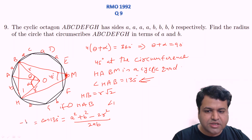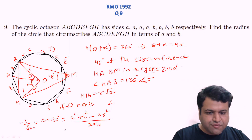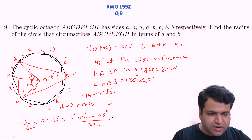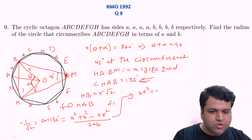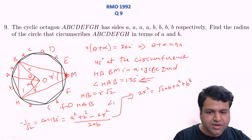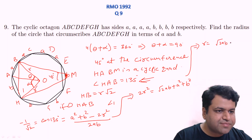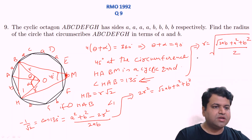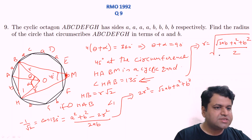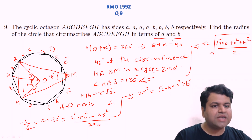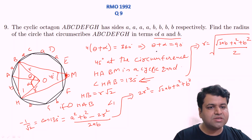Since HB subtends 90° at center O and OH = OB = r, we get HB² = 2r². Also cos(135°) = -1/√2. Substituting: -1/√2 = (a² + b² - 2r²)/(2ab). Rearranging gives 2r² = √2·ab + a² + b², so r = √[(a² + b² + √2·ab)/2]. This is the circumradius expressed entirely in terms of a and b, as required.